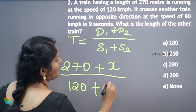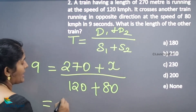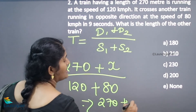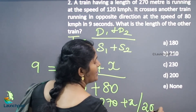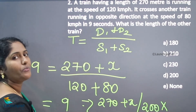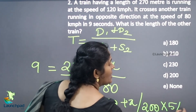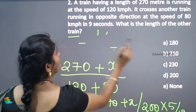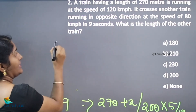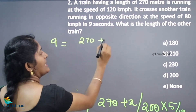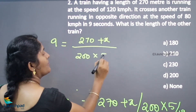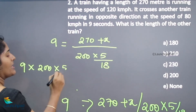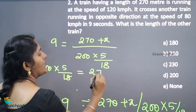So 120 plus 80 equals 200. Therefore: 9 equals 270 plus x, divided by 200 kilometers per hour — and we convert this by multiplying by 5 over 18 to get meters per second. So: 9 equals (270 plus x) divided by (200 into 5 over 18). Cross-multiplying brings 9 into 200 into 5 over 18 to equal 270 plus x.